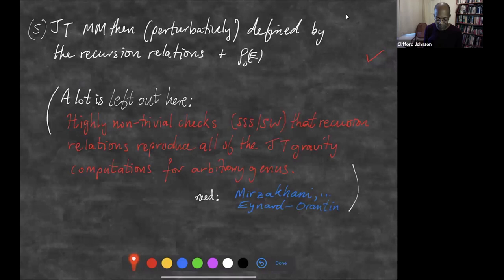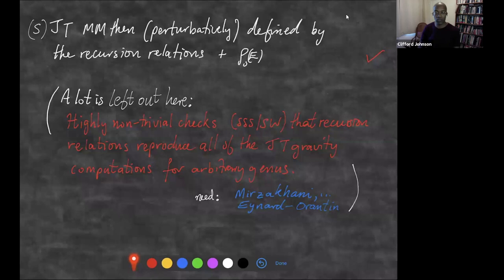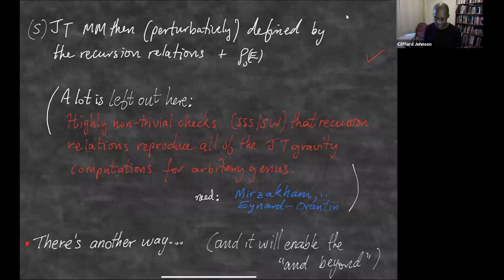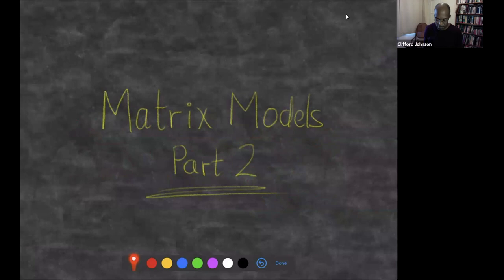Of course you need to check highly non-trivial things — you need to verify that the recursion relations from the matrix model side are actually reproducing the correct JT gravity physics order by order in genus. For that you need powerful mathematical techniques derived, for example, by Mirzakhani and adapted to matrix model language by Eynard and Norantine. I'm not using that today, but I need to remind you that's what that does, and it's highly non-trivial and very exciting. There's another way of doing this that enables the 'and beyond' part.